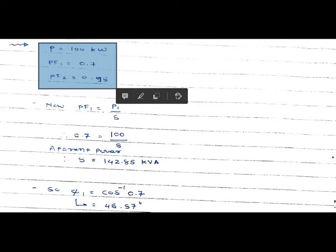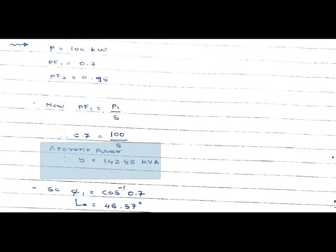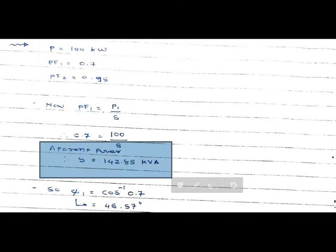We know the equation from the power factor power triangle: power factor 1, cos phi 1, is given by P divided by S, where P means active power and S means apparent power. With power factor 1 equal to 0.7, the equation becomes 0.7 equals 100 divided by S. From this equation, the apparent power S is equal to 142.85 kilovolt-amperes.